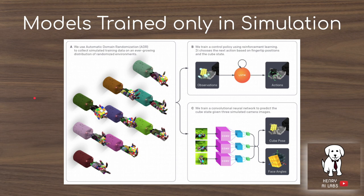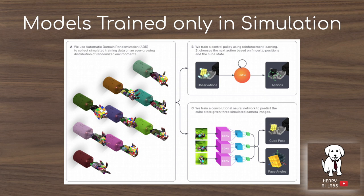One of the most interesting characteristics about the success of using this robotic hand to solve the Rubik's cube is that all the training data — the models — are trained only in simulation, never interfacing with the real world until testing time. There are two separate models: the policy network that controls the robotic hand to make manipulations and move the Rubik's cube, and the vision model used to estimate the cube pose and get the face angles.